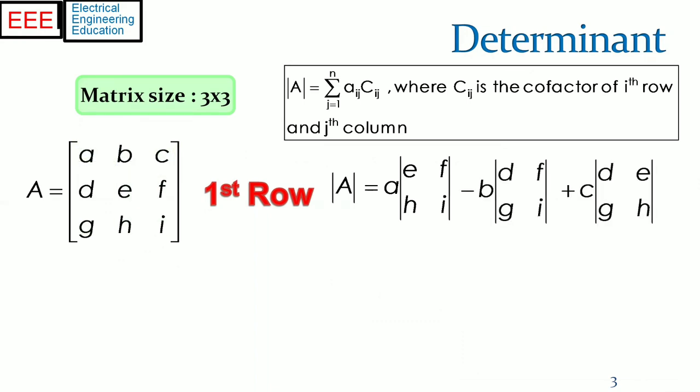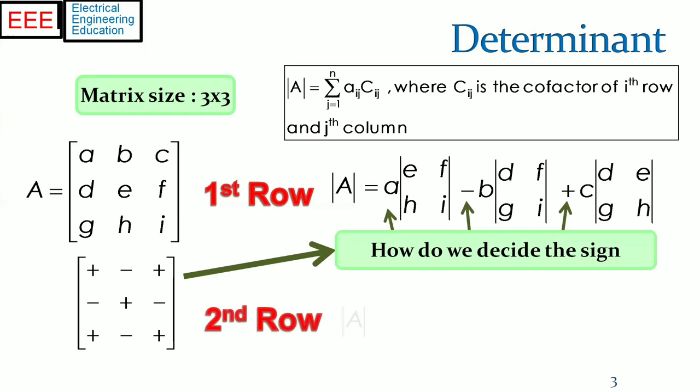The sign is obtained by taking minus 1 raised to the power of i plus j, where i is the row number and j is the column number.